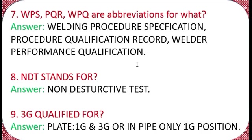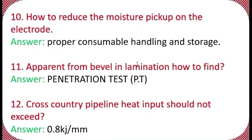Question 9: What is a 3G welder qualified for? This is very important — 3G qualifies for plate, both 1G and 3G positions on plate, and in pipe only the 1G position. Question 10: How do you reduce moisture pickup on electrodes? The answer is proper consumable handling and storage. Question 11: How do you find lamination apparent from a bevel? The answer is penetration test.